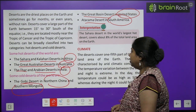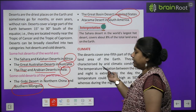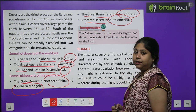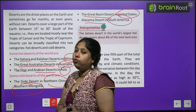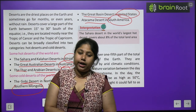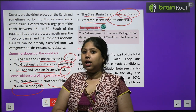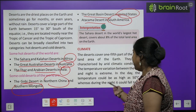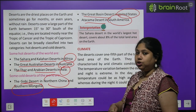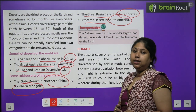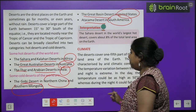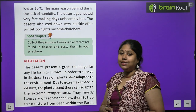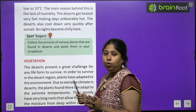Deserts cover one-fifth of the total land area of the earth. They are characterized by arid climatic conditions. The temperature variations between day and night are extreme — din mein jitni garmi hogi, raat mein utni hi thandi hogi. The temperature can go as high as 50 degrees Celsius during the day and fall as low as 10 degrees Celsius at night.